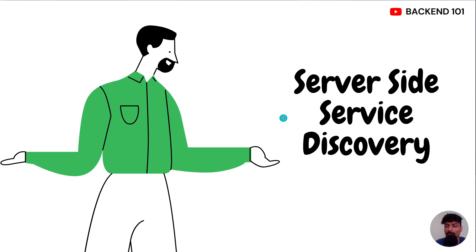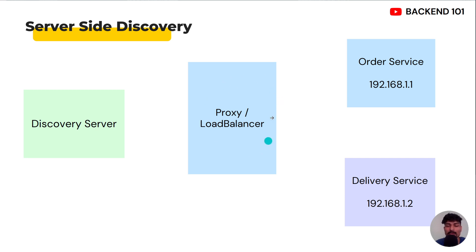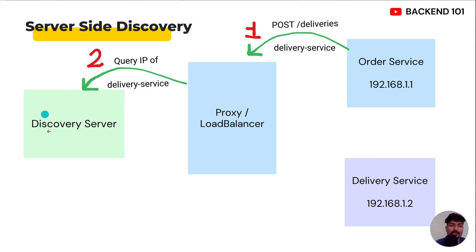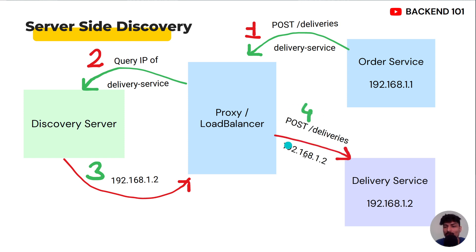In server-side service discovery, we introduce an additional component known as a proxy or load balancer — we can use a gateway for this as well. Whenever order service wants to communicate with delivery service, it makes the actual request to the load balancer. Importantly, order service is not asking for the IP address; it is making the actual request it would have made to delivery service. The load balancer then communicates with the discovery server to get the IP address and performs the actual request to delivery service.